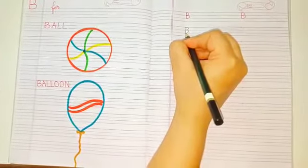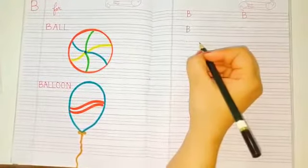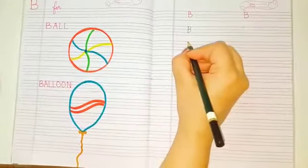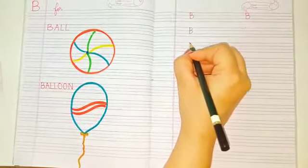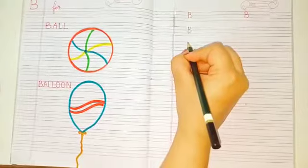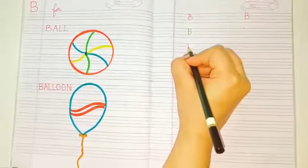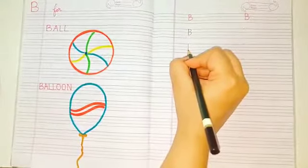Good job. Let's do that again. To write letter B, go to the top and draw a line down. Like this. Yes. Yes.